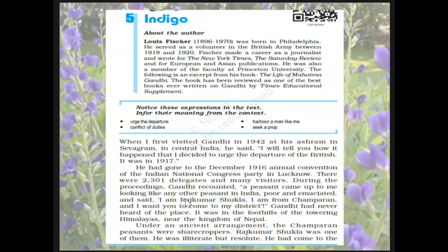During the proceedings Gandhi recounted: 'A peasant came up to me looking like any other peasant in India, poor and emaciated, and said, I am Rajkumar Shukla. I am from Champaran and I want you to come to my district.' Gandhi had never heard of this place — it was in the foothills of the towering Himalayas near the kingdom of Nepal. Here the 'I' becomes Rajkumar Shukla, the sharecropper who was responsible for convincing Gandhi to come to Champaran.